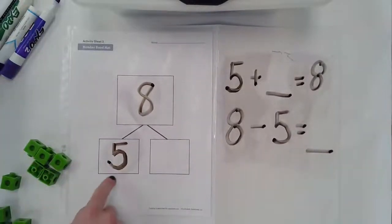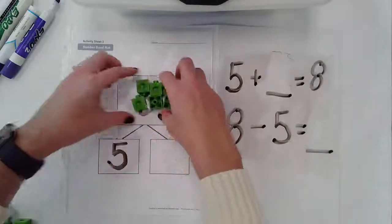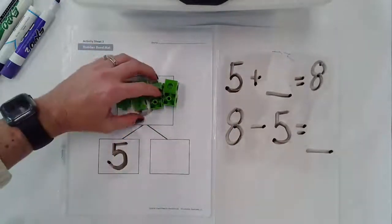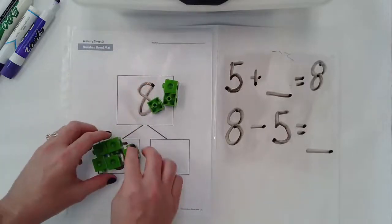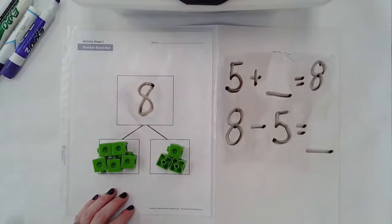So let's move back to our number bond here. And I have six, seven, eight. If I give five to this addend, how many are going to be in this addend?